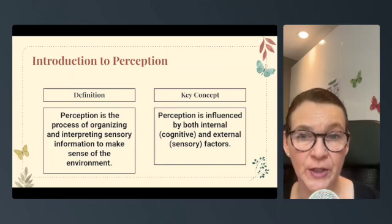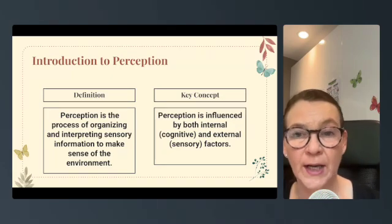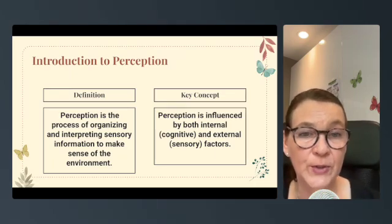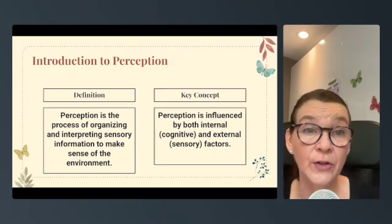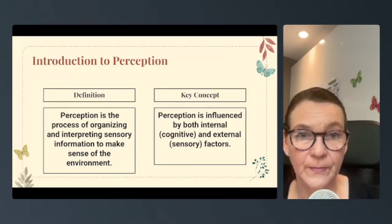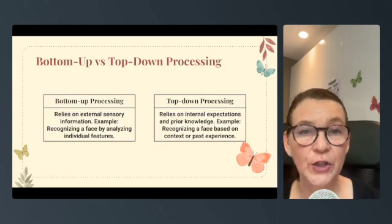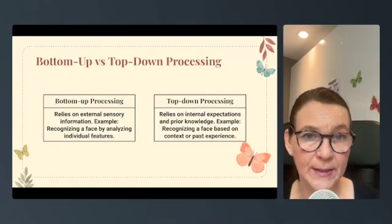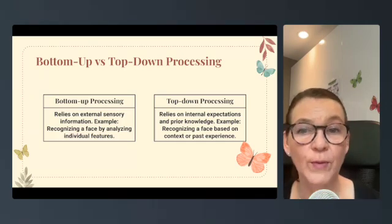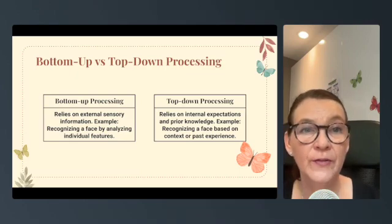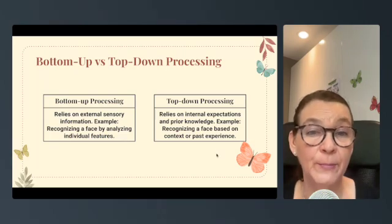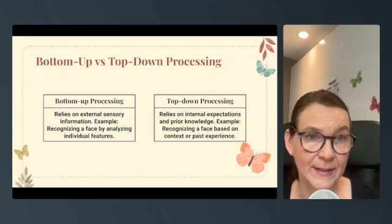We're going to start with the definition of perception. Perception is the process of organizing and interpreting sensory information to make sense of the environment. Then we're going to look at bottom-up versus top-down processing. Bottom-up processing relies on external sensory information — for example, recognizing a face by analyzing individual features. Top-down processing relies on internal expectations and prior knowledge — for example, recognizing a face based on context or past experience.